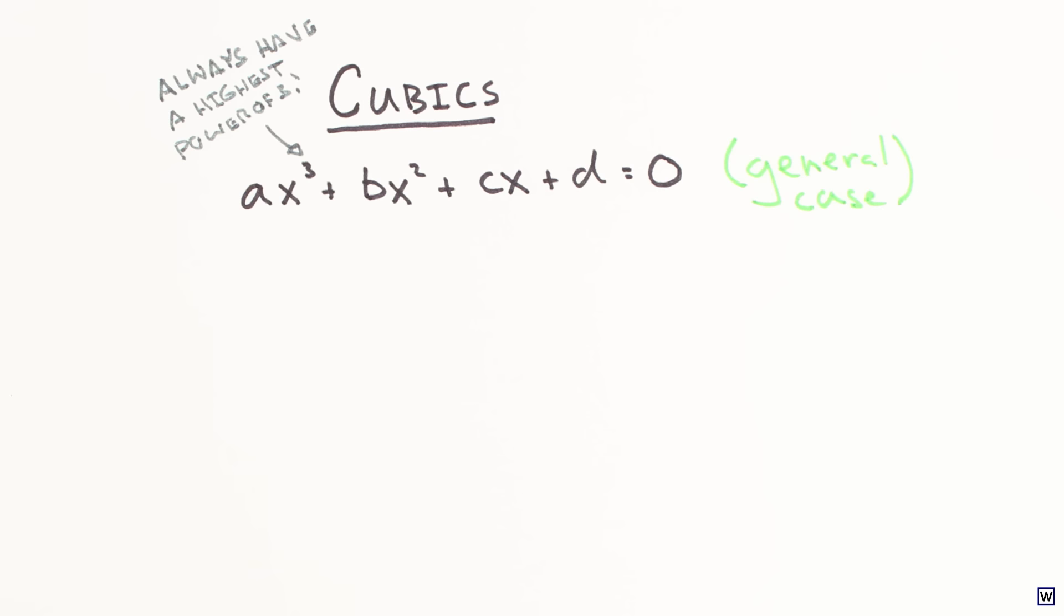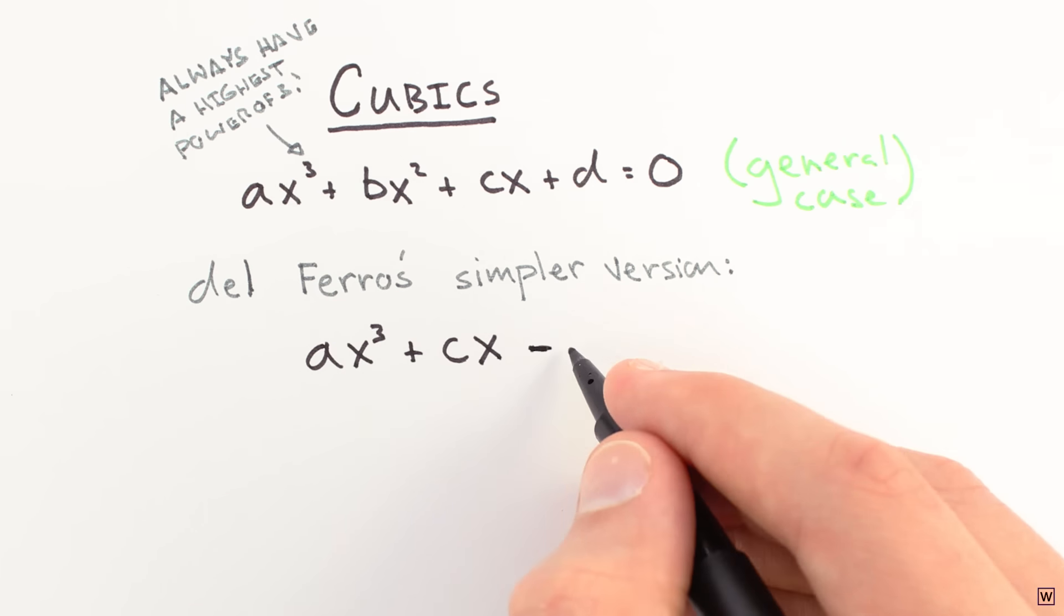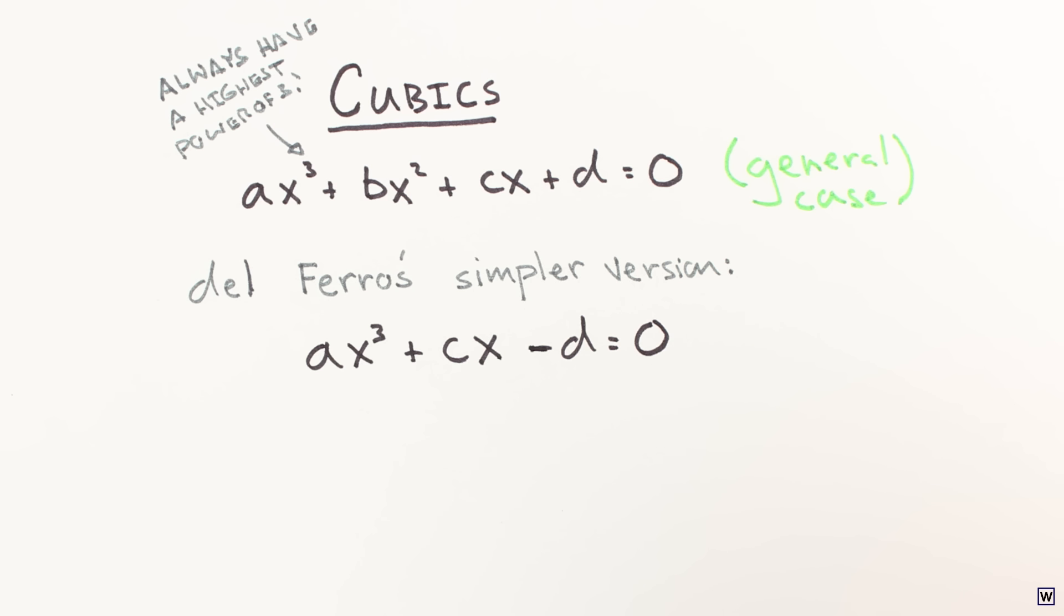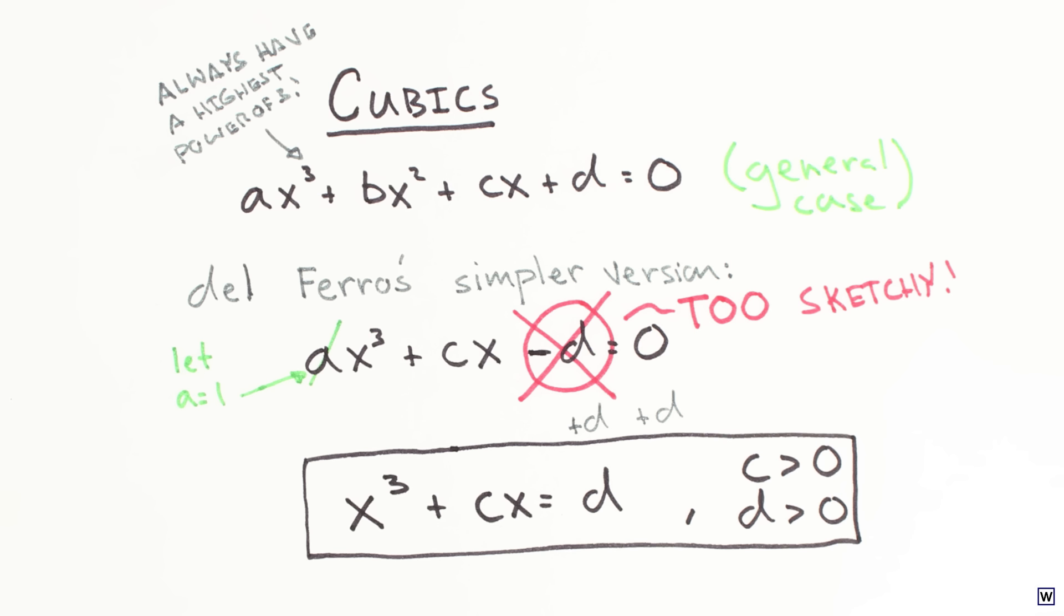The general case is pretty tough, so Del Ferro first considered the case where the x squared term is missing and the last term is negative. In the 16th century, negative terms were way too sketchy to write, so Del Ferro wrote his cubic as x cubed plus cx is equal to d, and required c and d to be positive.